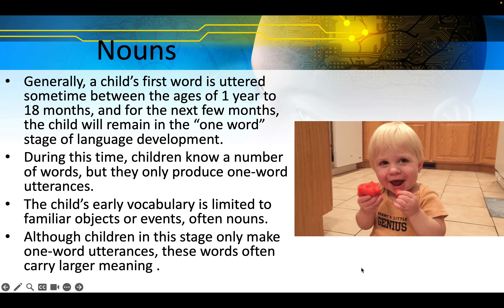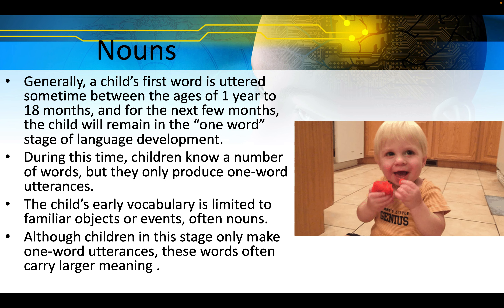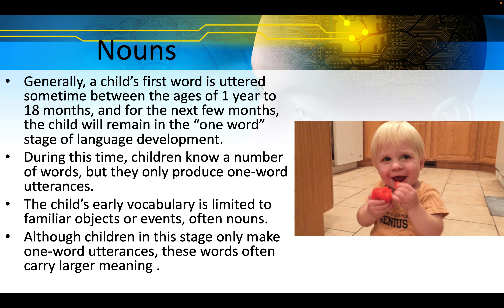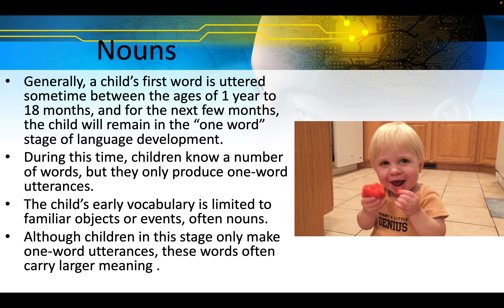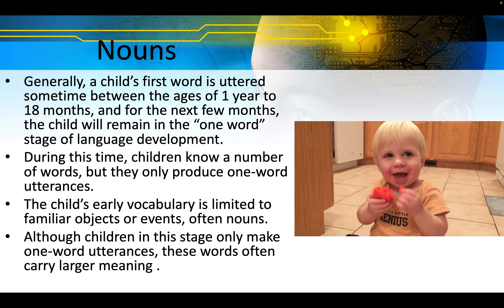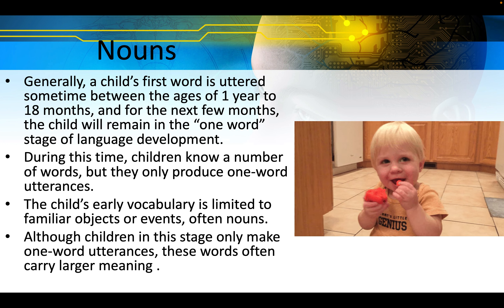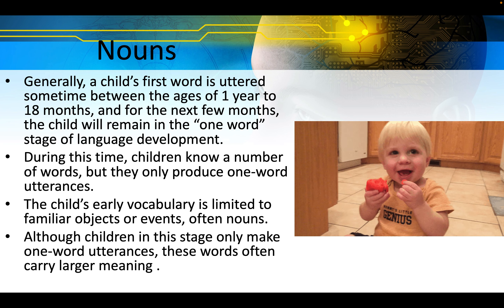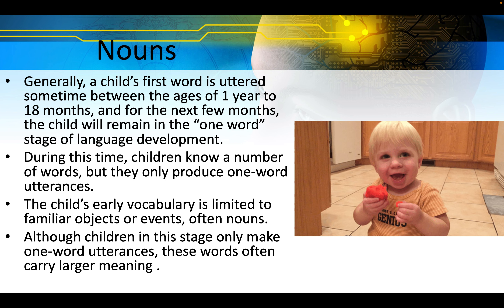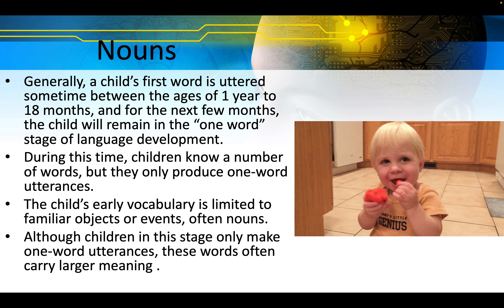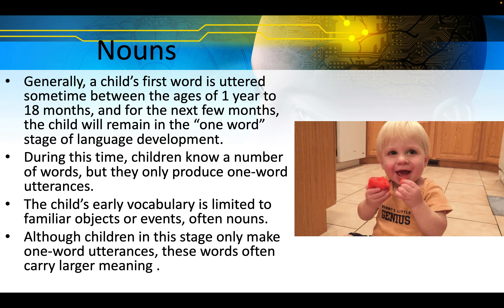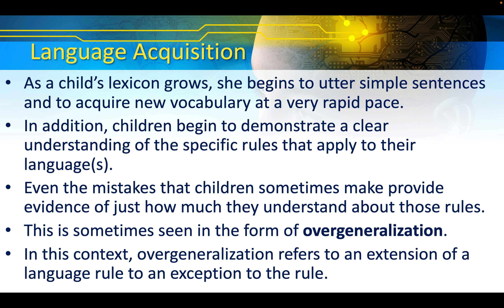Generally, a child's first word is uttered sometime between the ages of one year and 18 months. For the next few months, the child will remain in the one-word stage of language development — children know a number of words, but they only produce one-word utterances. The child's early vocabulary is limited to familiar objects or events, often nouns. Although children in this stage only make one-word utterances, these words often carry larger meanings. As a child's lexicon grows, she begins to utter simple sentences and to acquire new vocabulary at a very rapid pace.